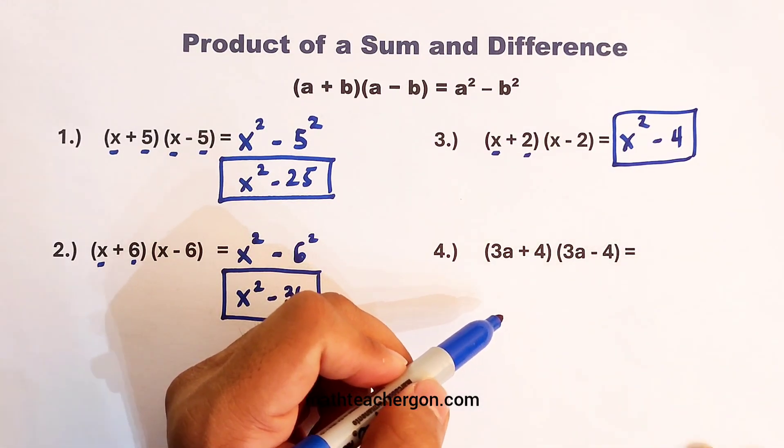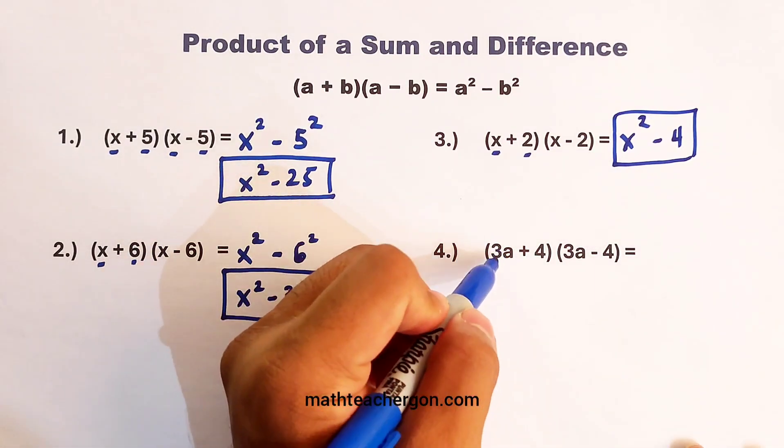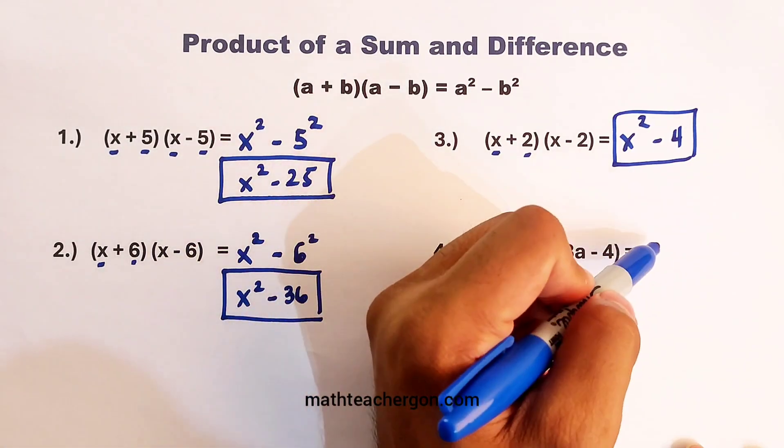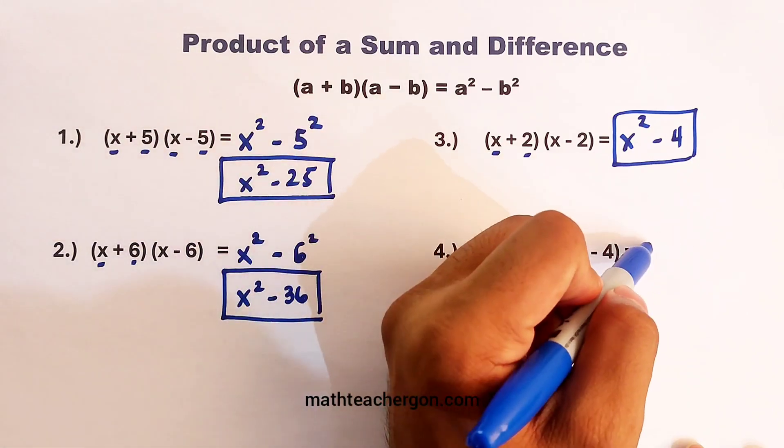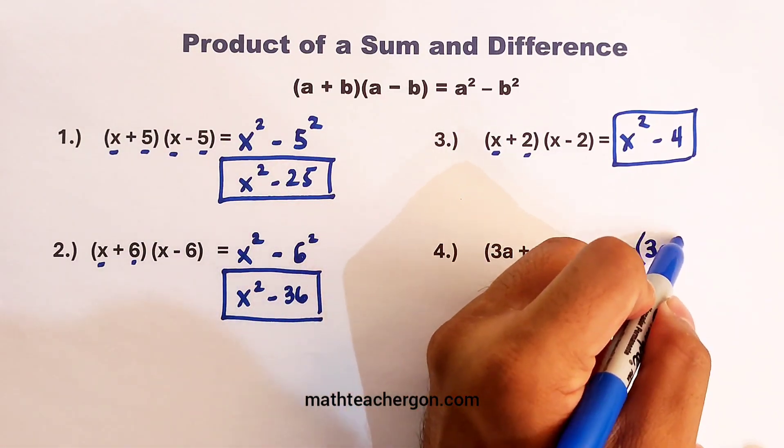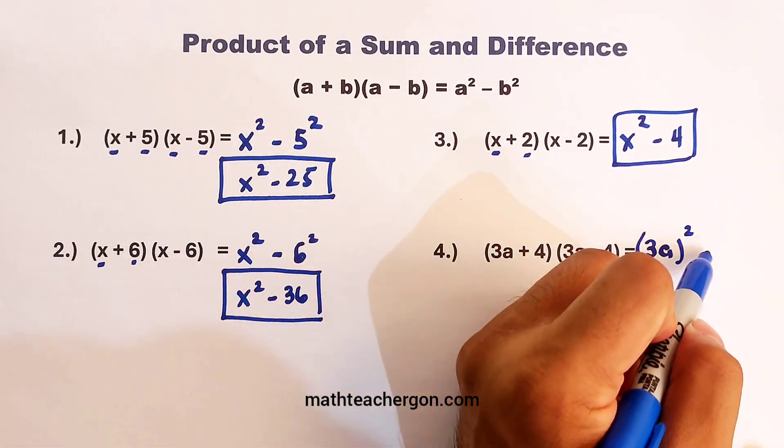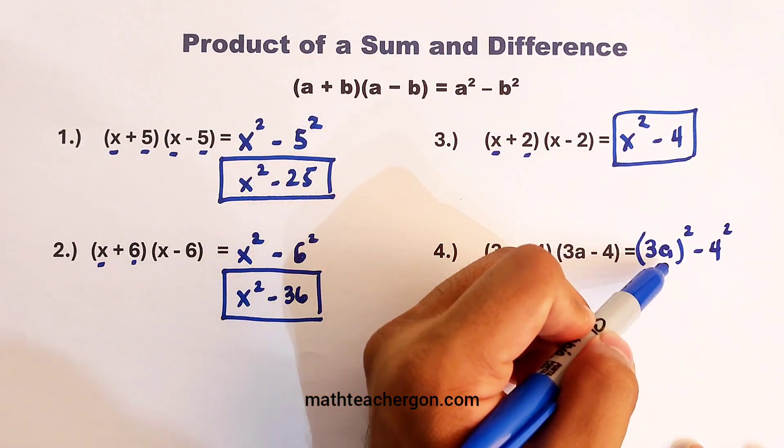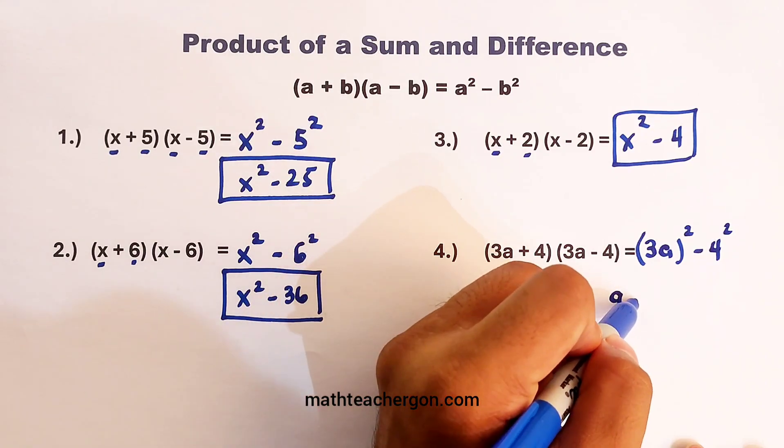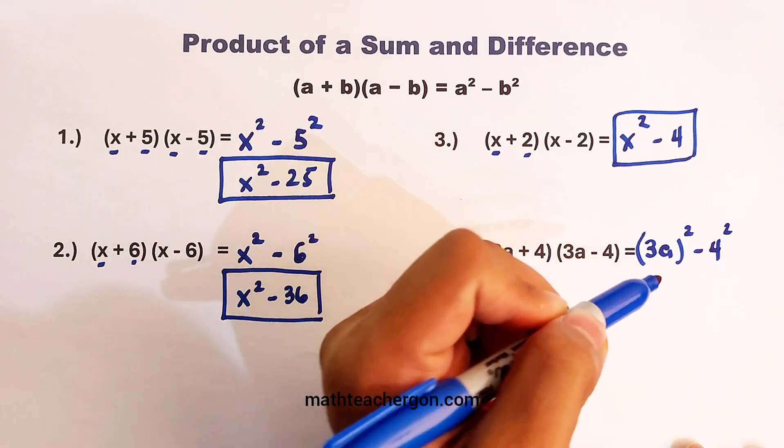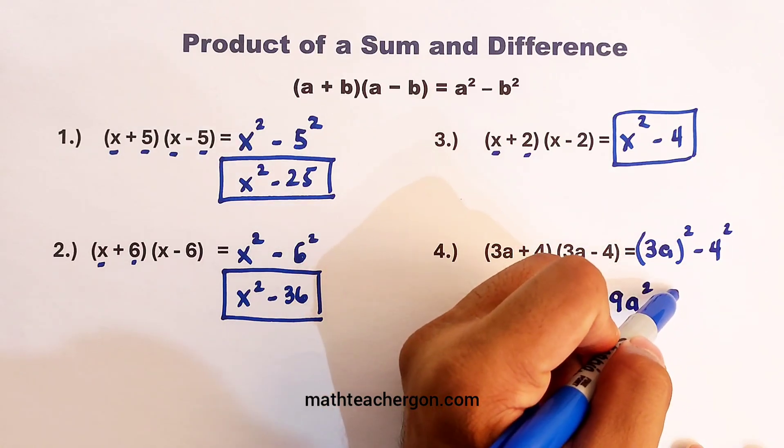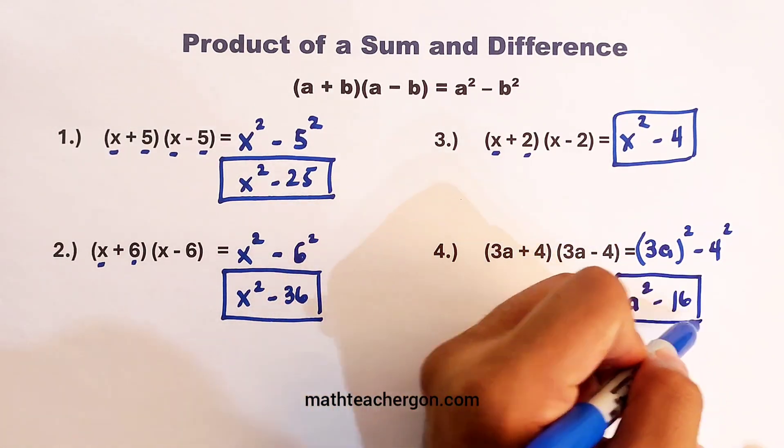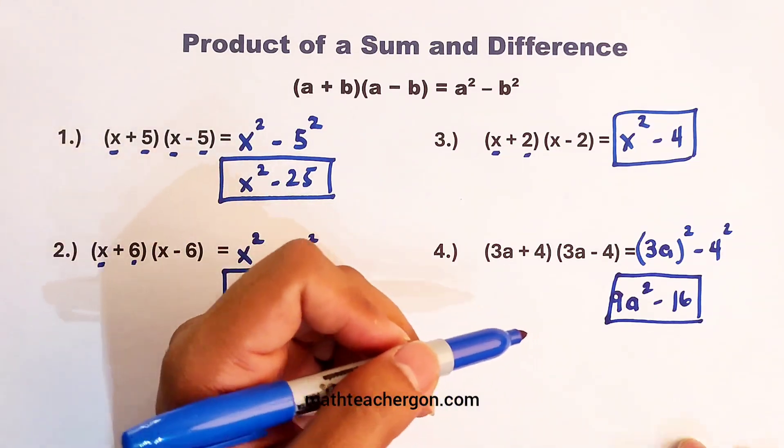Let's go with the last part of these examples. We have 3a minus 4 times 3a plus 4. The first term is simply 3a. You need to square it. Then minus the second term, square 4. 3a raised to the second power is 9a raised to the second power. Minus 4 squared, which is definitely equal to 16. Now, this is the product. We have 9a squared minus 16.